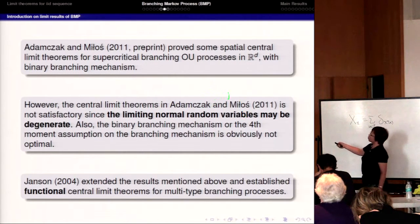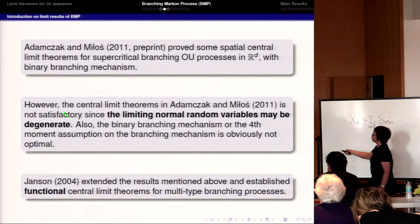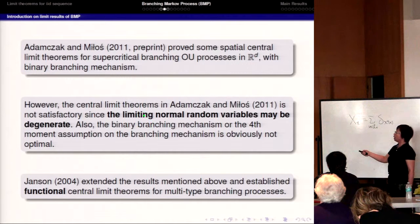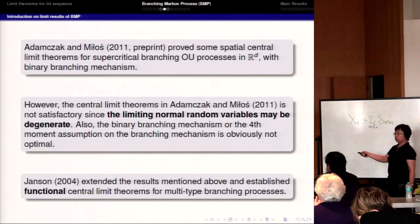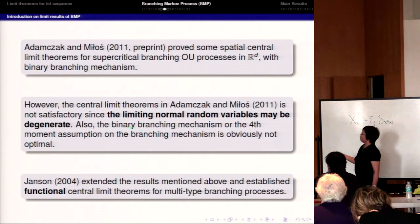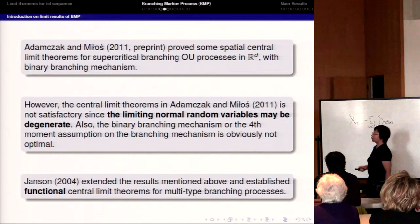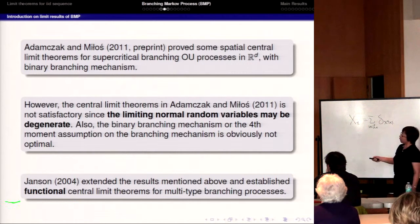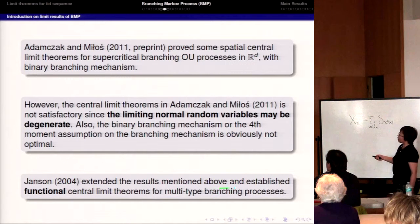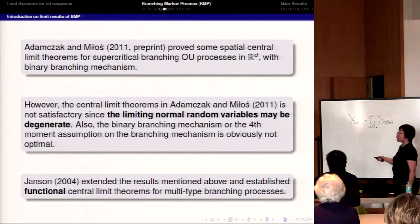The result given in that paper is not satisfactory because the limit can be degenerate, and the branching mechanism is special. There is another paper related to my talk by Yasson, which gives the functional central limit theorem for multi-type branching processes.